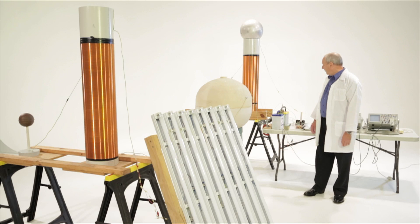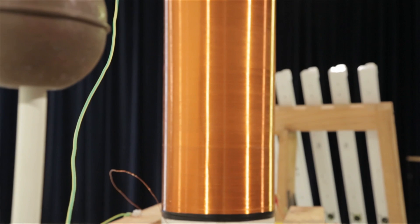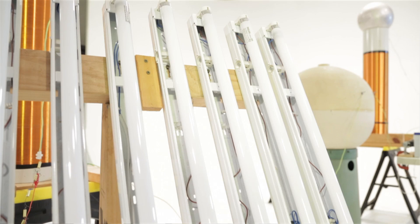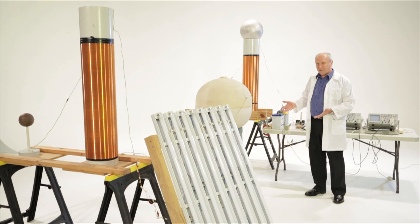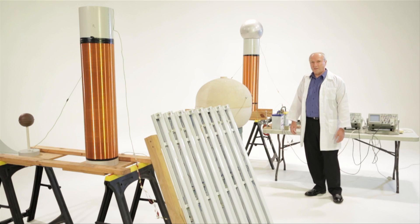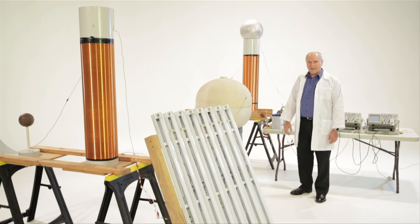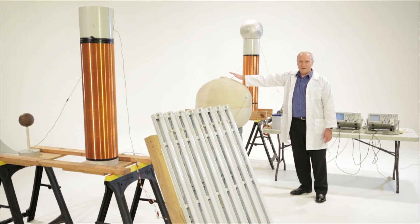This is a model of the WPT system. The idea of this model is to actually demonstrate wireless power transmission. The WPT system uses a simple process of transmitting energy through the ground, that is the earth. In this model, this ball here represents planet earth.